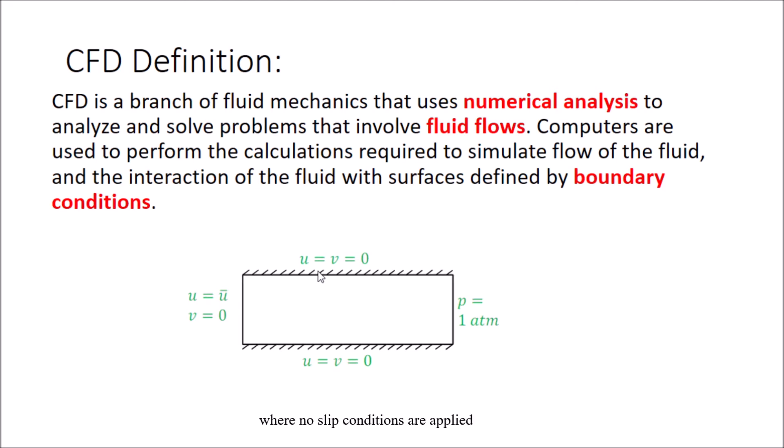u and v equals to zero—u means velocity in x direction and v means velocity in y direction—in the lower side as well. In the inlet part, the velocity in x direction is assumed to a constant value and the velocity in y direction is zero. In the right side, which is called the outlet part, we are assuming the atmospheric pressure is applied. So these are the boundary conditions.